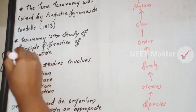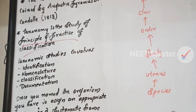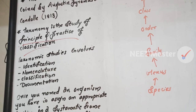Taxonomy is the study of the principle and practice of classification. Classification is a study of Taxonomy. Taxonomy involves the identification, classification, and documentation of organisms. We have identified certain plans and binomial nomenclature in documentation.